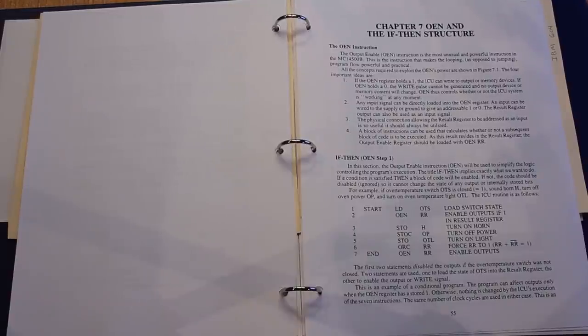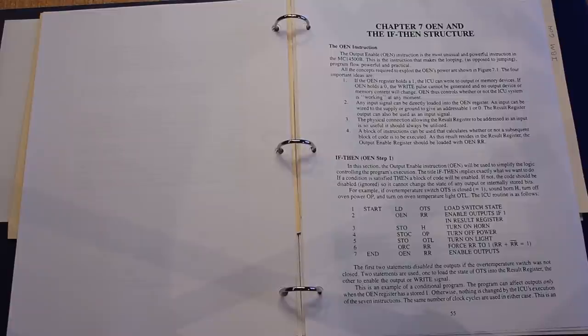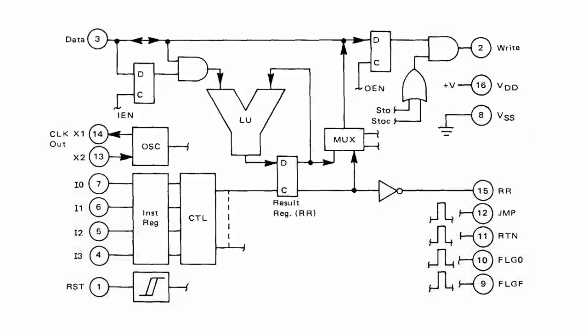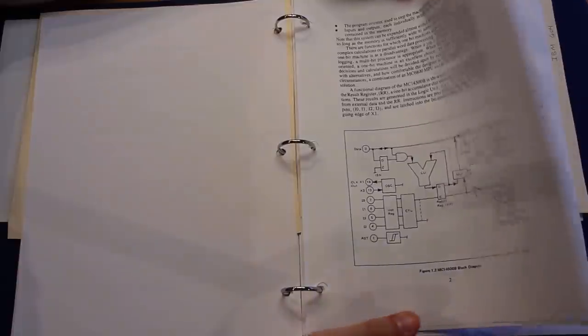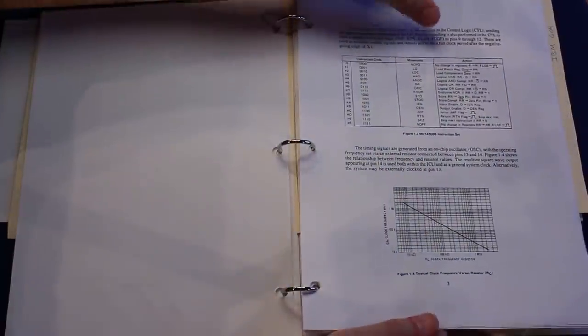Let's flip ahead to the chapter dedicated to OEN. They even list chapter 7 as OEN and the if-then structure. OEN is just an instruction that will store whatever data is on the data bus into the output enable register. If we remember back to our block diagram, OEN is listed in the top right. The output of OEN goes into an AND gate. The other input of that AND gate is shared with an OR gate that has STO and STOC on it. The output of that AND gate goes to pin number 2, which is the write pin.